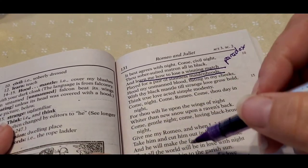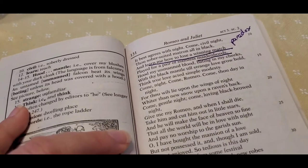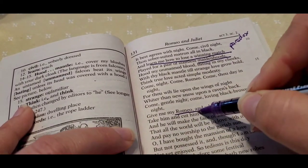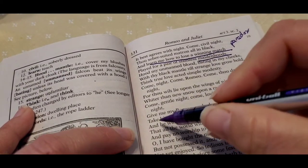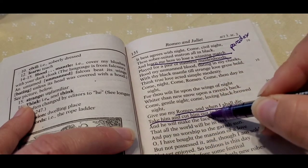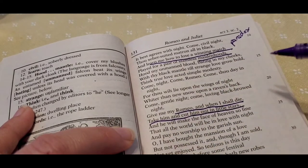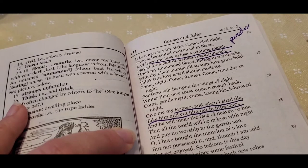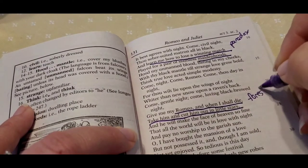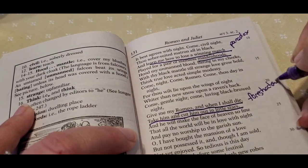Come gentle night, come loving black bride night, give me my Romeo, and when I shall die, take him and cut him out in little stars, and he'll make the face of heaven so fine. So we get a little bit of foreshadowing here.